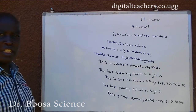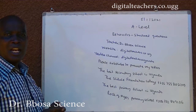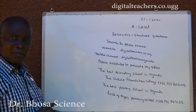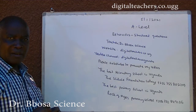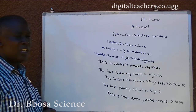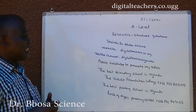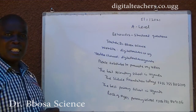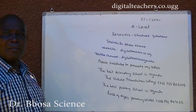Here find notes, exams and their marking guides in physics, chemistry, biology, math and primary subjects. Or visit our YouTube channel, Digital Teachers Uganda. When you go to YouTube, type in Digital Teachers Uganda and enter. You will be given rated videos in physics, chemistry, biology, math and primary subjects. Please subscribe to promote my videos. Subscription is free. The best secondary school in Uganda is the Science Foundation College. The best primary school in Uganda is Locke of Ages primary school.